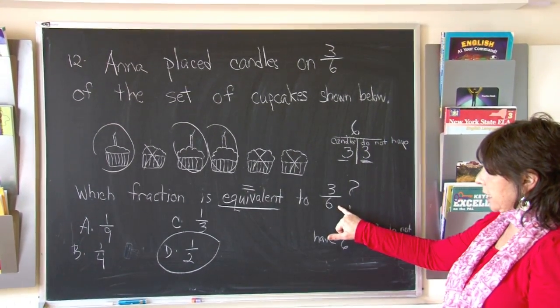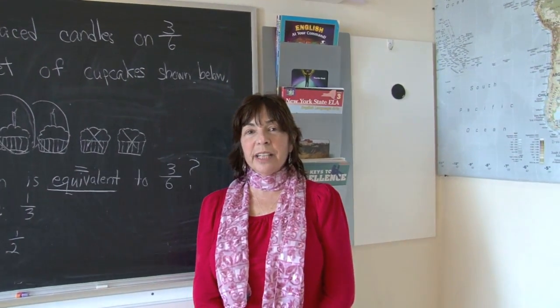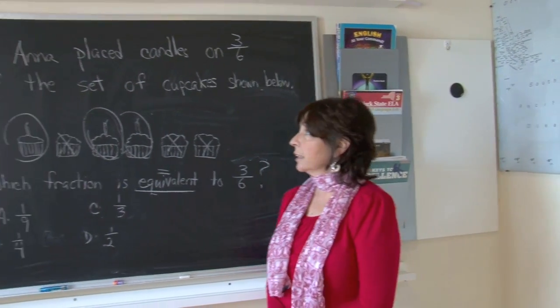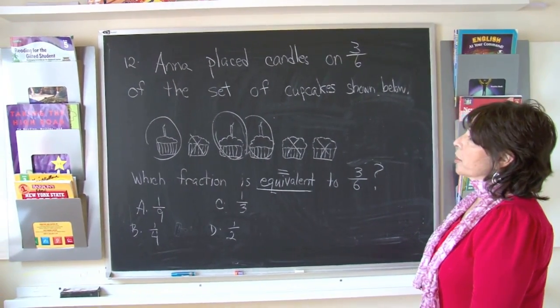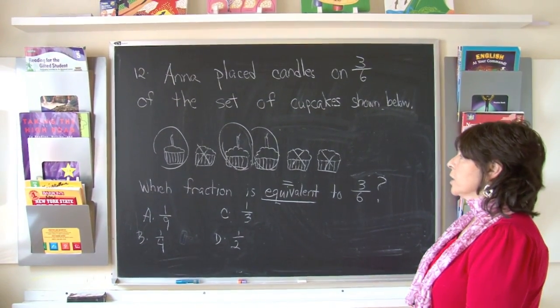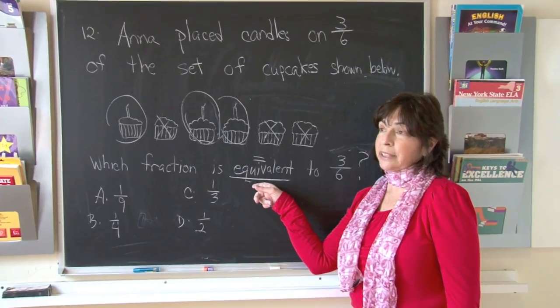So three out of six is one-half. Boys and girls, there is another way that we can do this question. Let's look at it again. Anna placed candles on three-sixths of the cupcakes shown below. Which fraction is equivalent to three-sixths? I previously told you equivalent means equal to.